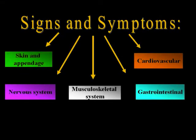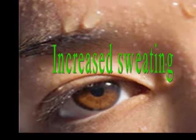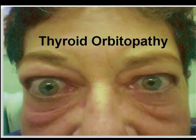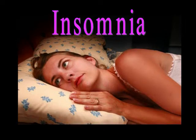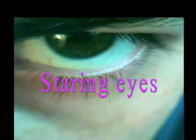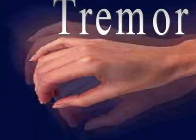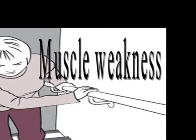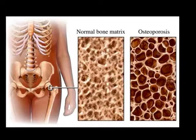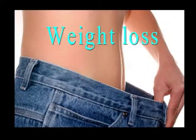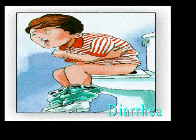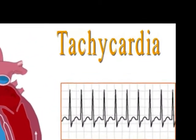Thyrotoxicosis is characterized by increased metabolism of all body systems due to excessive quantities of thyroid hormones. The clinical signs and symptoms reflect increased adrenergic activity, especially in cardiovascular and neurological systems. Additional clinical features will depend on the underlying cause of thyrotoxicosis. The extrathyroidal manifestations of Graves' disease deserve separate mention; most frequent is ophthalmopathy, due to inflammation and expansion of the contents of the orbit.